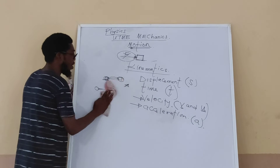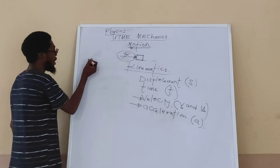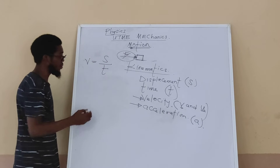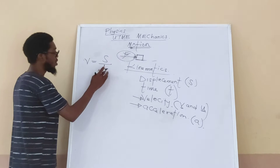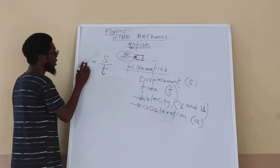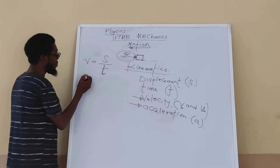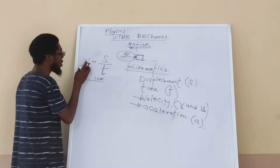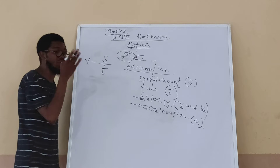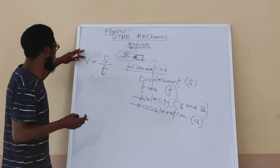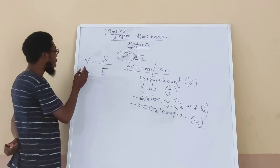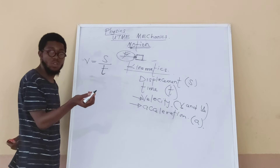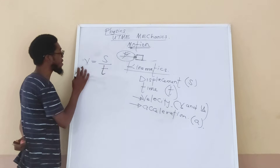Velocity means change in displacement with time, so velocity equals change in displacement over time. However, during a journey we may be covering 10 metres per second at one point, then 15, then 20. When someone asks what our velocity was, we could have used five or seven different velocities during the journey, so it's difficult to say it was simply 10 or 15 metres per second.